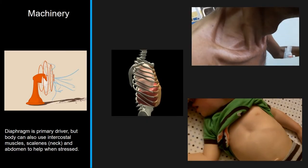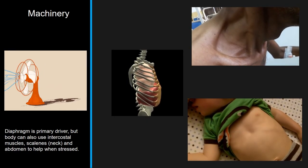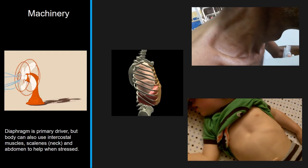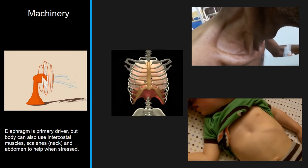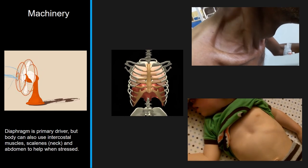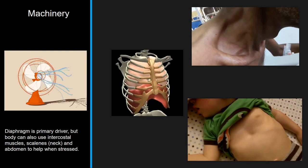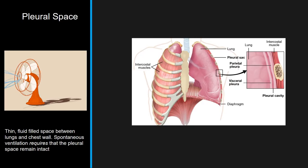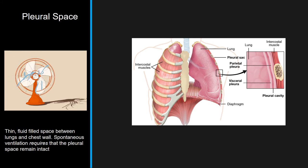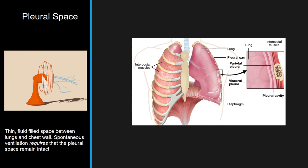You can see that the person on the top has scalene retractions or supraclavicular retractions, and then the kid on the bottom has intercostal retractions. The diaphragm is the primary driver — you also use intercostals, and you can see how not only does the diaphragm flatten, but that the chest wall increases as well. The intercostal muscles pull up. And you can see the pleural space — if you violate that, remember it is a potential space and a lot of stuff can get in there, whether it's fluid, air, blood, or pus.